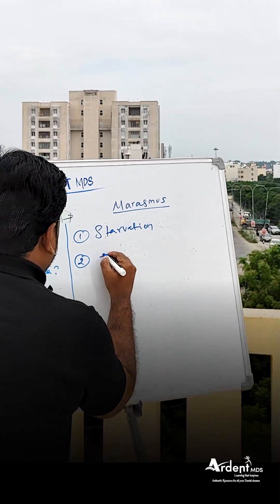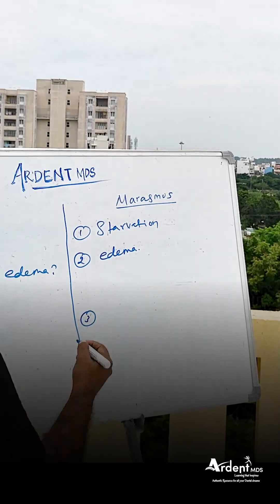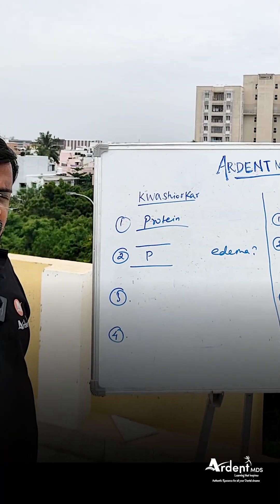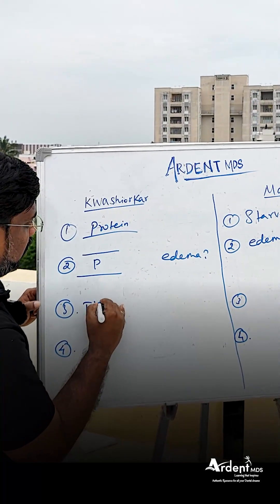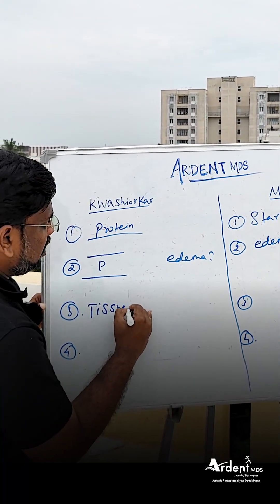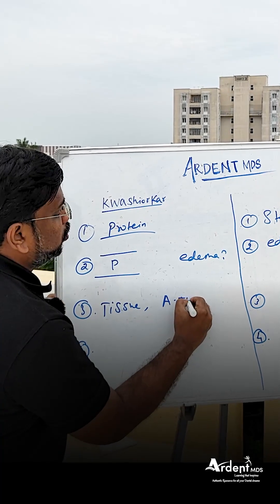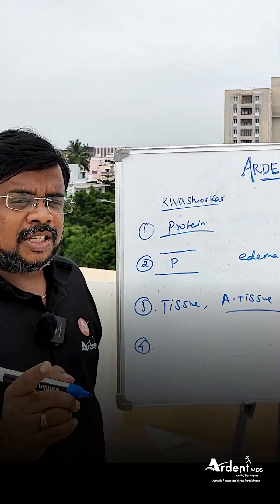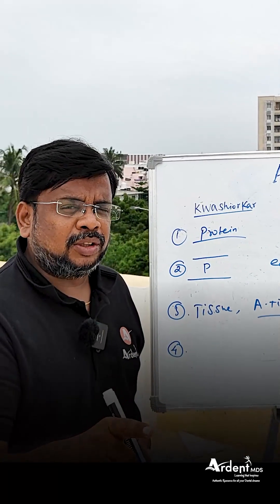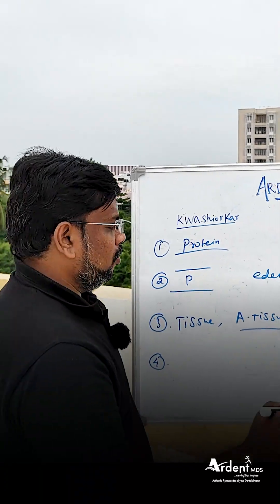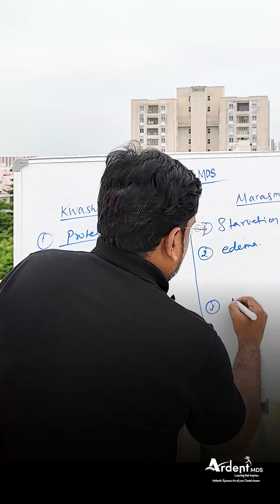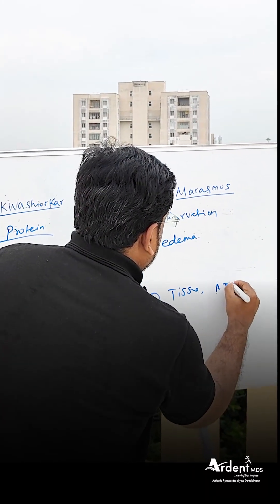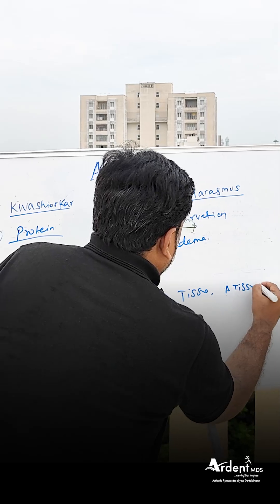In Kwashiorkor, since the patient has protein deficiency, the patient loses tissue, but there is preservation of adipose tissue. In Marasmus, however, the patient loses both tissue and adipose tissue — both are lost in Marasmus.